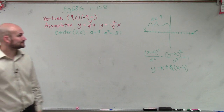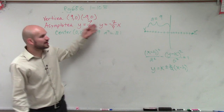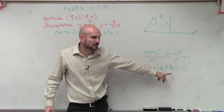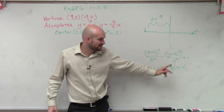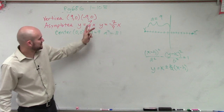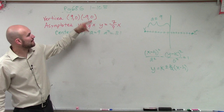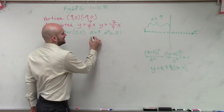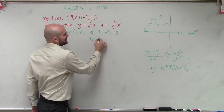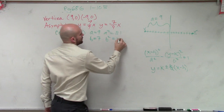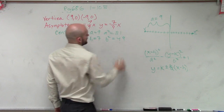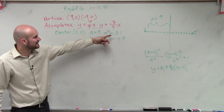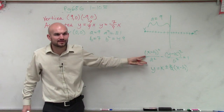Now let's look at what our two asymptotes are. Notice how the formula is b over a. You notice you have a as your 9. So therefore, my b has to be 7. If b equals 7, then b squared equals 49. So now, ladies and gentlemen, we know a, we know b, and we know the center. Can we now write the equation?